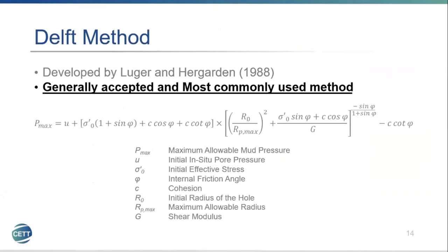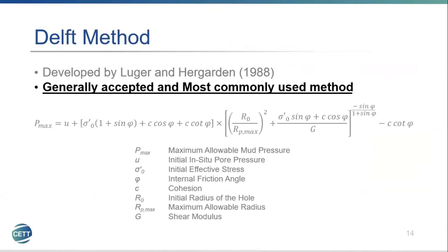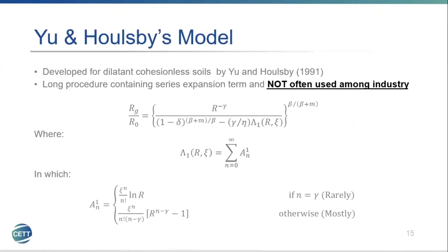The DELF method was developed by Luba and Hergarden in 1988. It is the most general, accepted, and commonly used method. The U and Whosebase method was developed in 1991 for dilatant cohesionless soils. It is not often used in industry because it has a long procedure and contains a series expansion term which many users find difficult to code into spreadsheets.